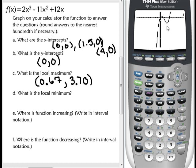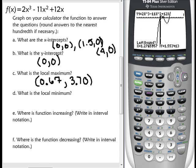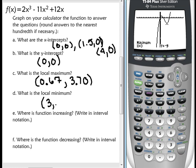Okay, so I for sure can see my minimum there. So 2nd, calc, enter for minimum. So I'm going to be to the left side of that minimum point, hit enter. To the right side of that minimum point, hit enter, and then enter for my guess. So my minimum turns out to be, my local minimum anyway, 3, negative 9.